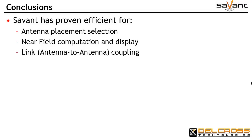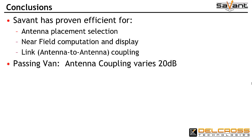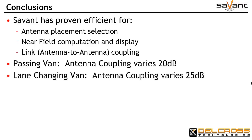As we've shown in this video series on inter-vehicle communication, Savant provides a very efficient tool for studying antenna placement on an electrically large vehicle, for computing the near fields around the antenna and its platform, and for computing antenna-to-antenna coupling even in dynamic environments. As the van passed the sedans, Savant predicted an antenna coupling variation on the order of 20 dB, and with a lane change by the van between the cars, Savant demonstrated antenna coupling variation of 25 dB.